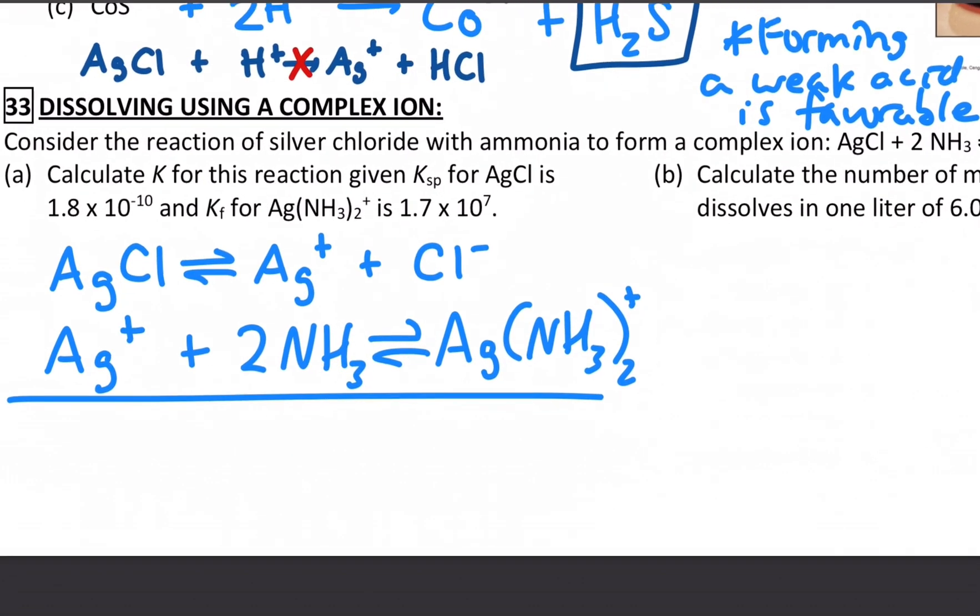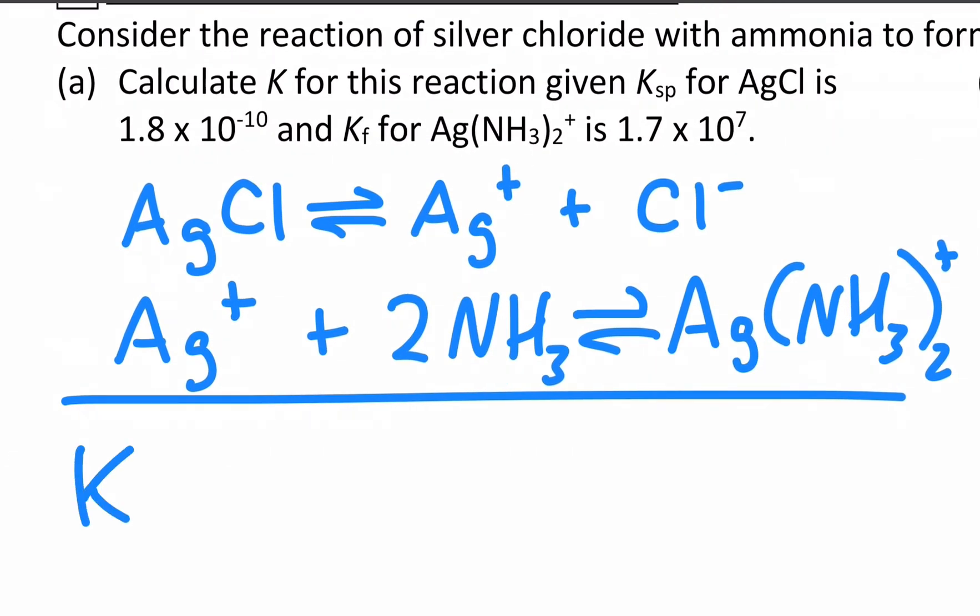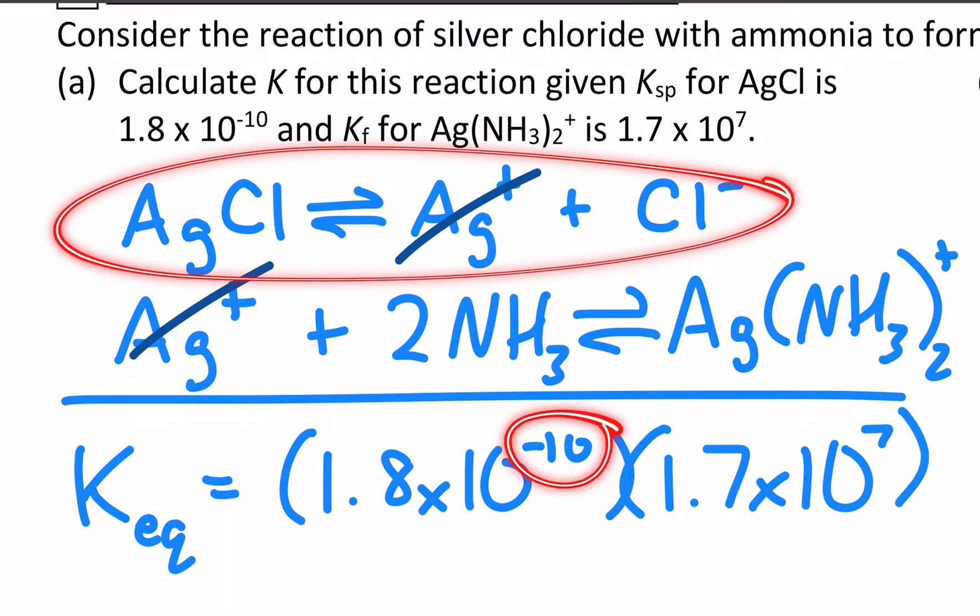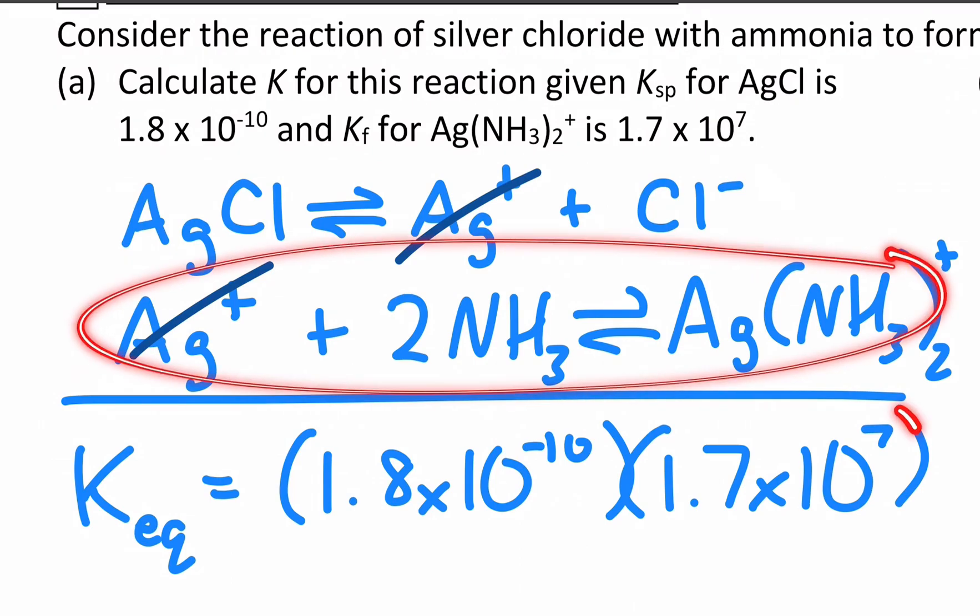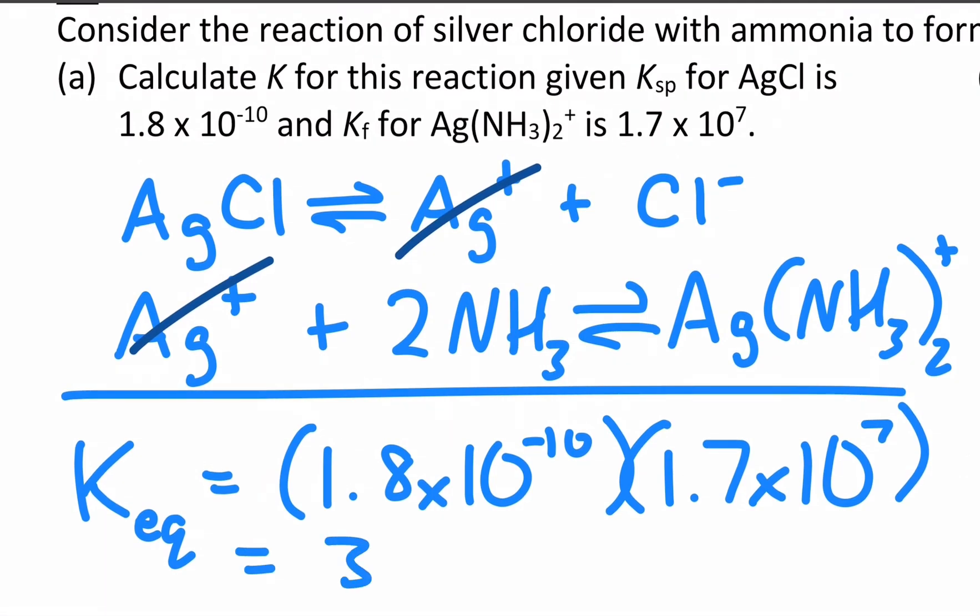When two reactions add to give a net reaction, the K values will multiply to give the net equilibrium constant. So the K for this net equilibrium, after combining these two, would be the product of the Ksp, which is 1.8 times 10 to the negative 10 for the first one. And then 1.7 times 10 to the 7 for the second one. Good reminder that Ksps are typically very small, whereas formation constants for complex ions are typically very large. And this gives us something that's mediocre. We get 3.1 times 10 to the minus 3 for that net reaction.